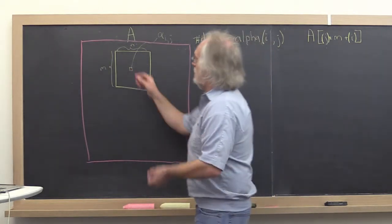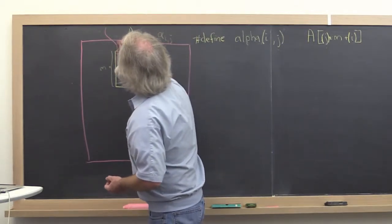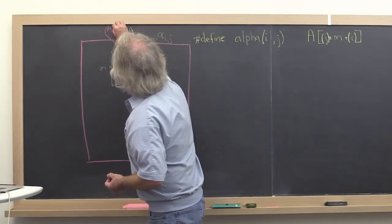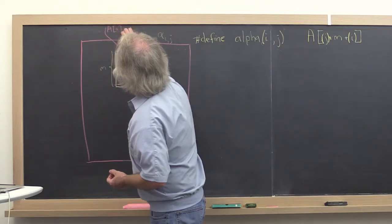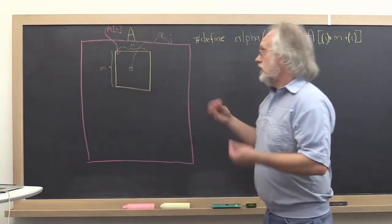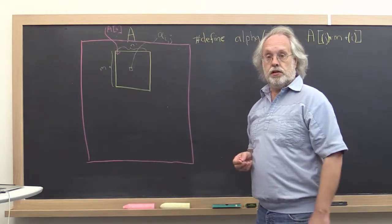It's still the case that this here is the address where A[0,0] is stored, but now we need to do fancier indexing.